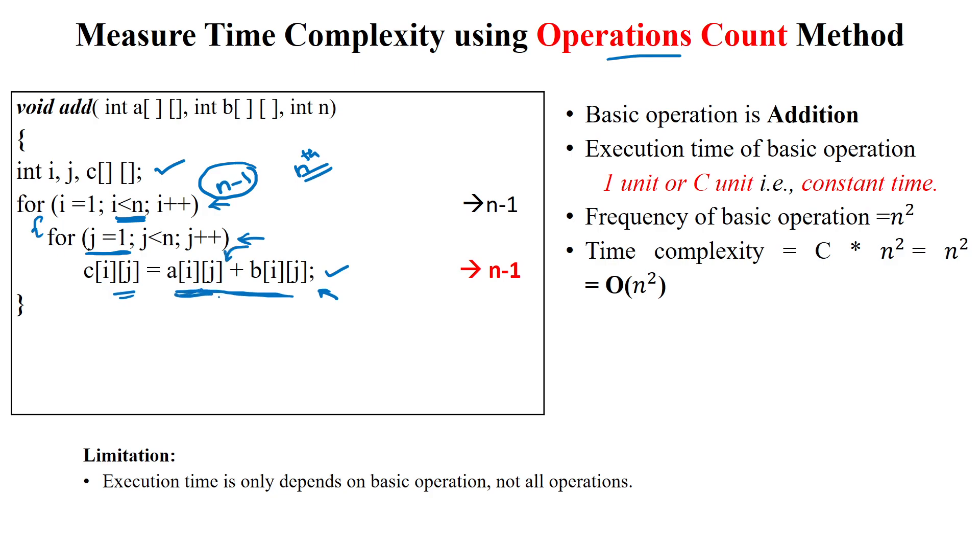For the for loop for I, it will execute for n minus one time. And this inner loop also will execute n minus one time. So, here, it will execute frequency, frequency is n minus one into n minus one time.